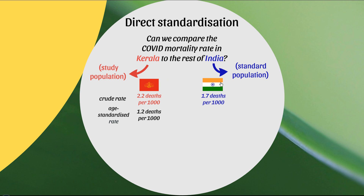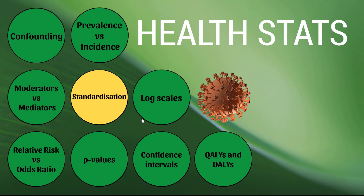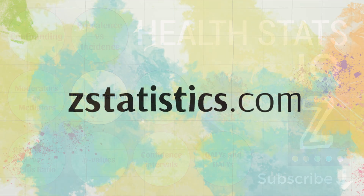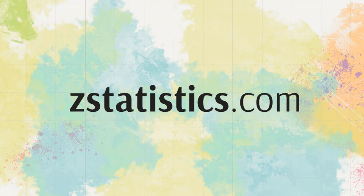Once we took the age distributions into account, Kerala turned out to be doing better than the rest of India in reducing its mortality rate. And that's standardization! If you've enjoyed the video, feel free to like and subscribe. I'll link all the Health Stats IQ videos in a playlist in the description, or check out Z Statistics dot com. Take care, stay safe and well — see you next time.